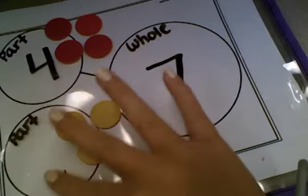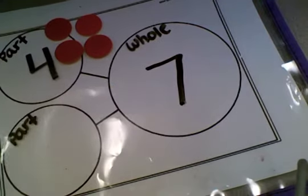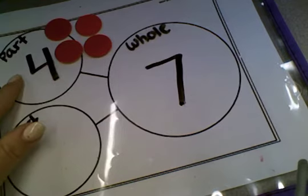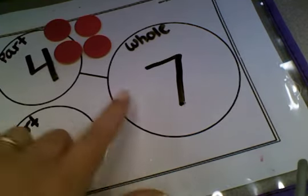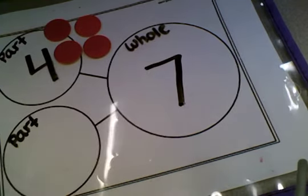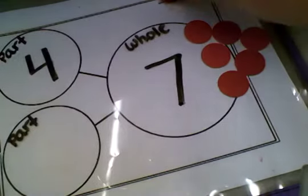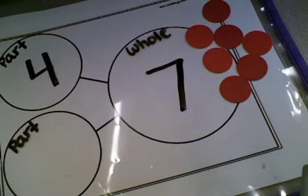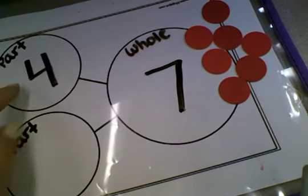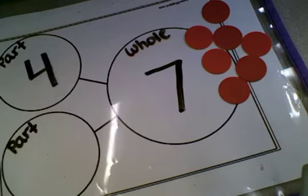There's one more way I could solve this problem. If I know that I have four in one of the parts and I know that I'm going to have seven altogether, I could start with seven chips. Then I can move them into the parts. I know that this part has four.